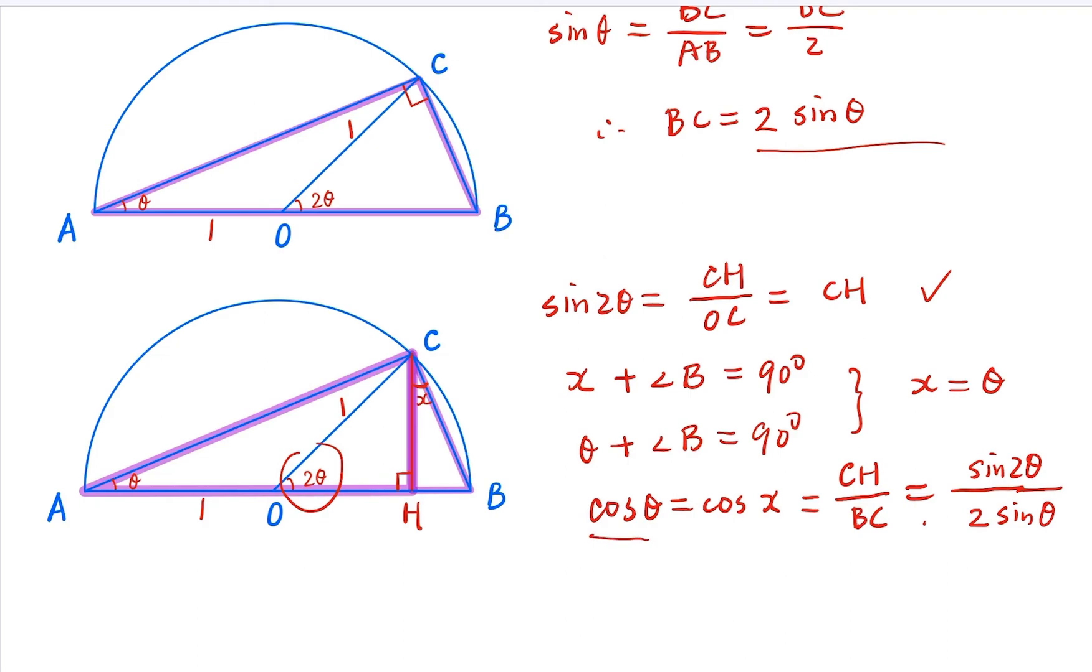Now, from this fraction here, you know that sine 2θ would equal cosine θ times 2 sine θ. In other words, that equals 2 sine θ cosine θ.